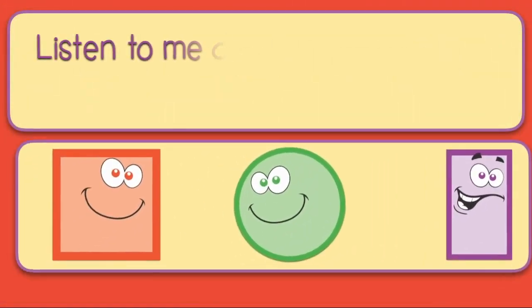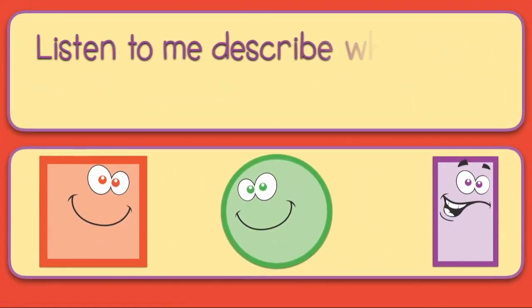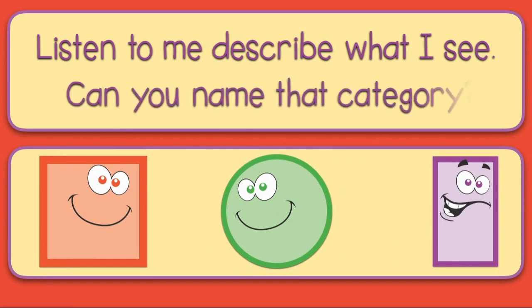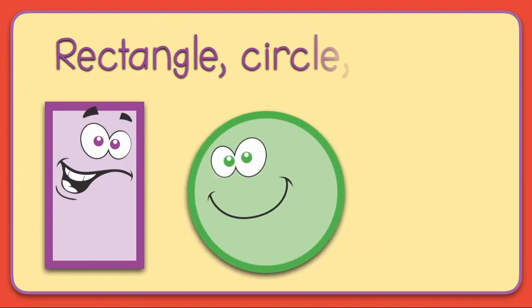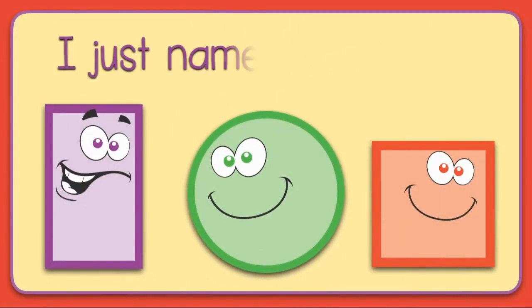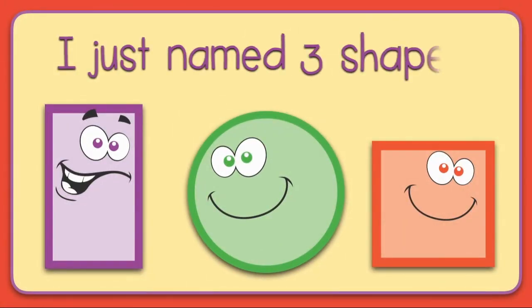Listen to me describe what I see. Can you name that category? Rectangle, circle, square. I just named three shapes.